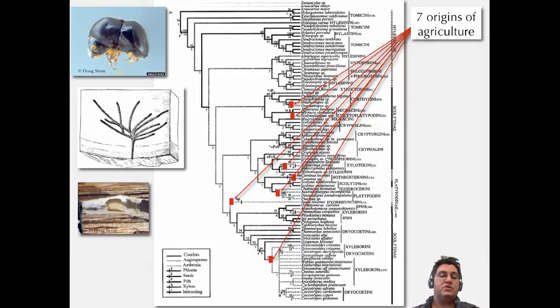It's pretty cool to think about agriculture evolving seven times in these beetles. Humans have only evolved it a few times. A lot more history here, a lot more species, and seven origins. We can figure out when that happened.